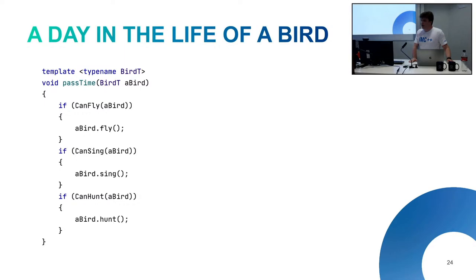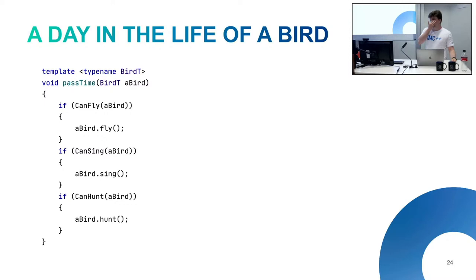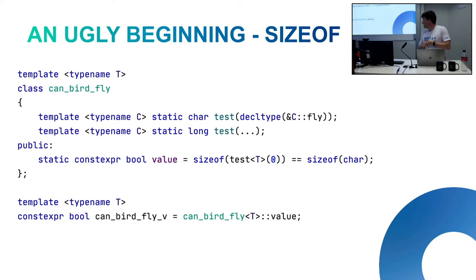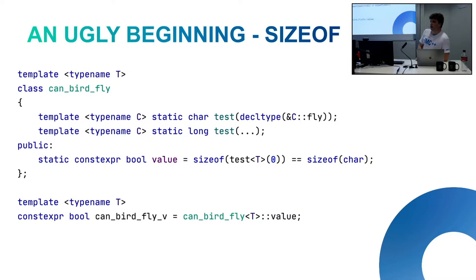This is our pseudocode 'day in the life of a bird' — functions: can fly, can sing, can hunt. Before C++14, the accepted way of being able to tell if a bird had a function called fly looks like this. Let's step through it because it's complicated. We have a helper class for determining whether a bird can fly. It has two template functions called test: one that works on decltype of &C::fly — a pointer to a fly member function — and another with '...' that will work on literally anything.